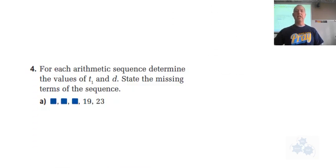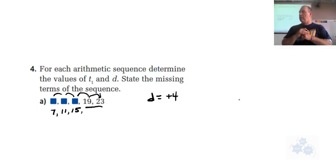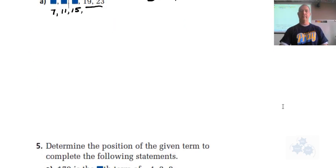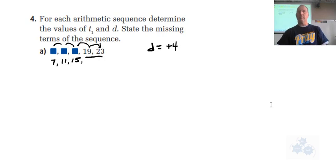Finally, number 4. For each arithmetic sequence, determine the values of T1 and D. State the missing terms. The common difference can come from the subtraction of 23 minus 19. So what's the common difference there? It is a 4, positive 4. So that means that we would add 4 to get to the next one. If we have to go back, we subtract 4. So this one's going to be 15 minus 4 is 11 minus 4 is 7.